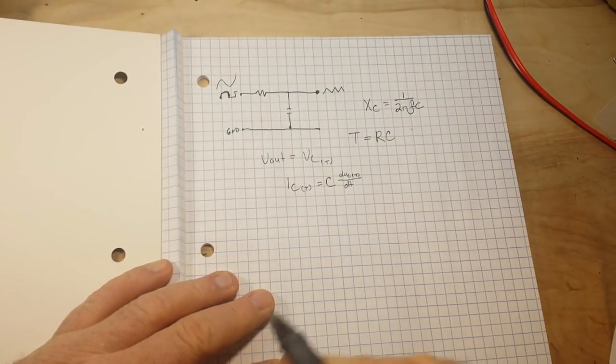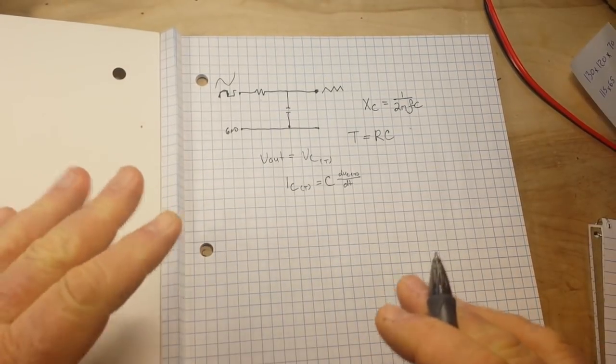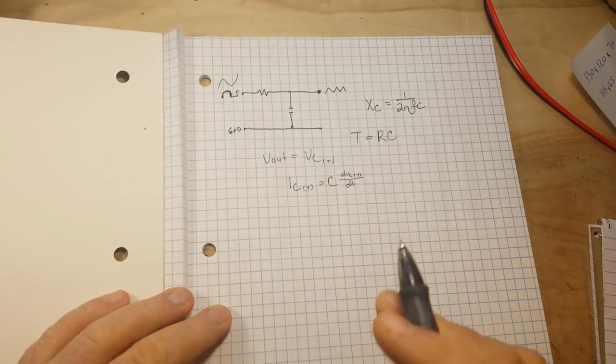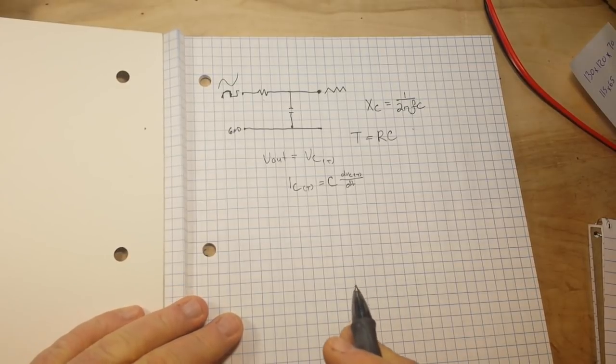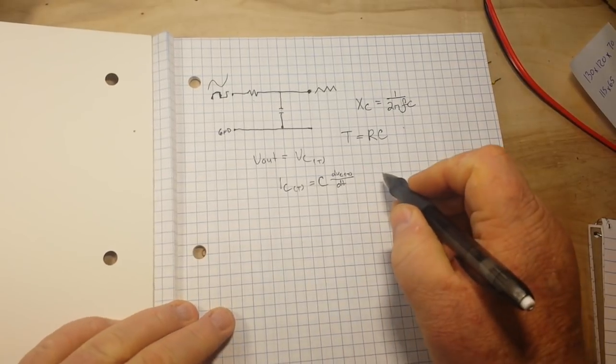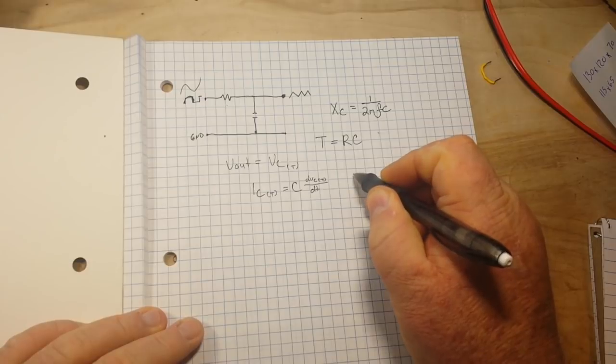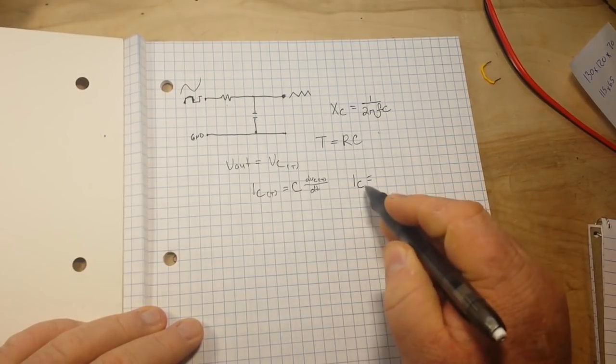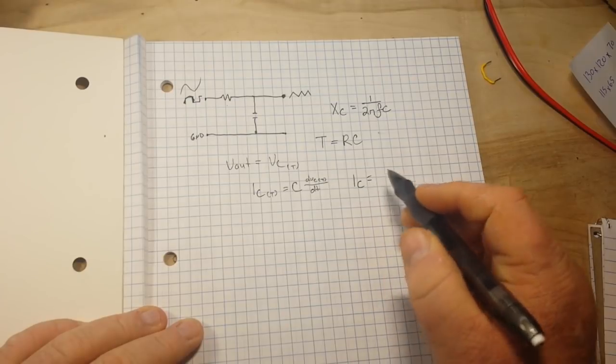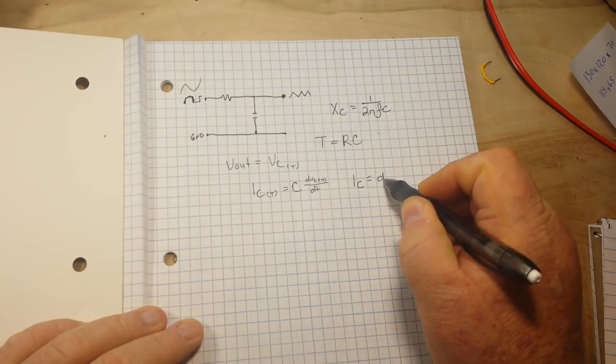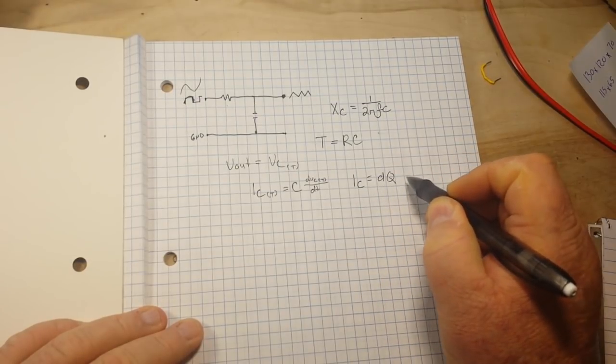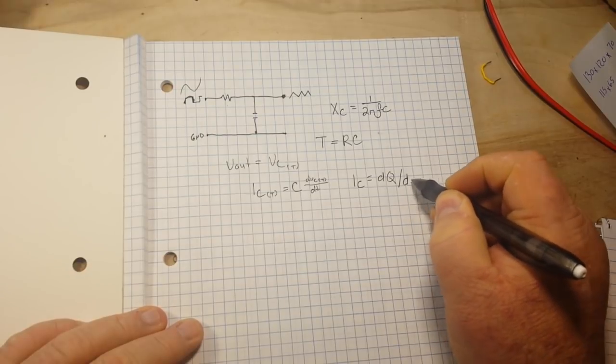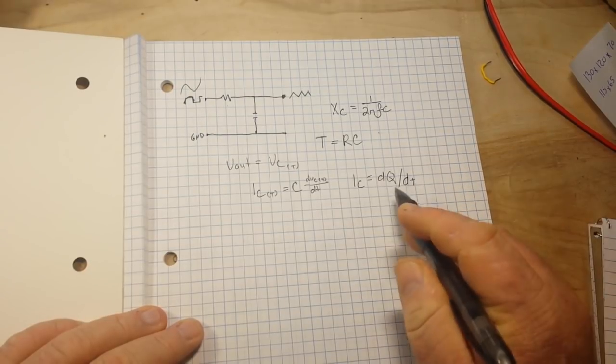So that's an integral. This is an integrator. See how that all works together? The equation can also be expressed as the instantaneous charge of the capacitor. So we can also write it as IC, no T, because this is the instantaneous charge, equals dq, the charge, divided by dt, the time.